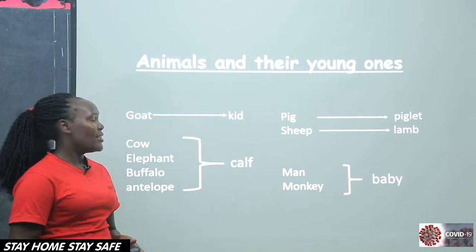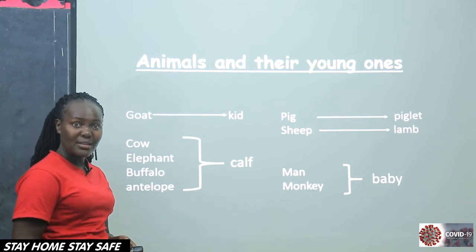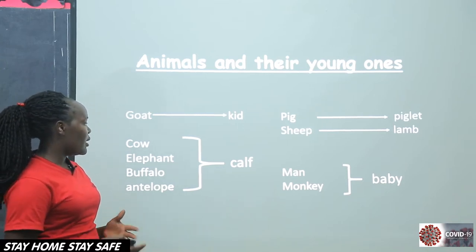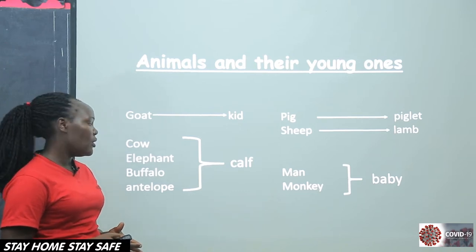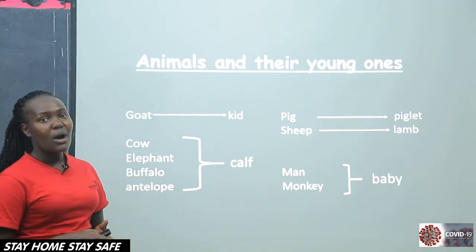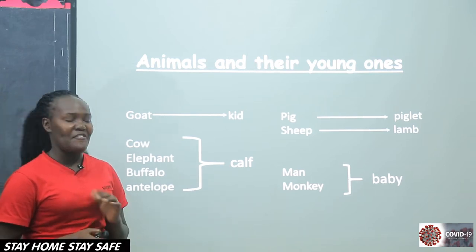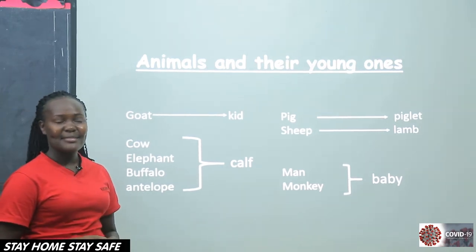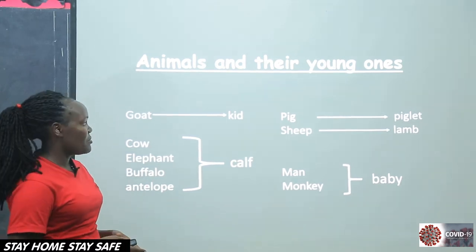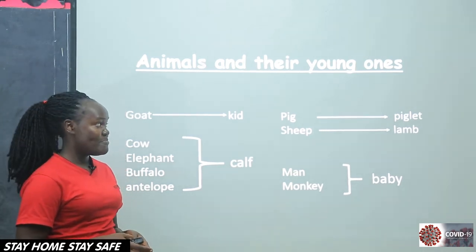Let's start with a goat. The young one of a goat is called a kid. Many of you keep goats at home, so their young ones are kids. We have the cow, elephant, buffalo, and the antelope — when it comes to these four, their young ones are called calves. If it is one, it is a calf, so they share the name. When it comes to a pig, it's piglets. Sheep — lamb.